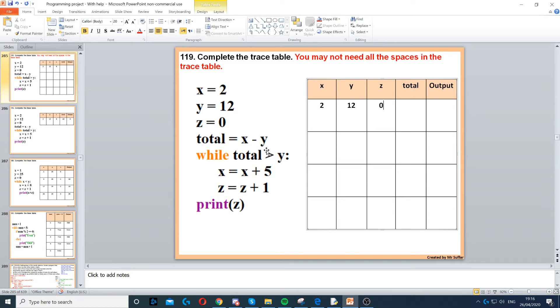Then, it says total equals x minus y. So, total equals x minus y, x is 2, minus 12, that will give us minus 10. Not 10, but minus 10.